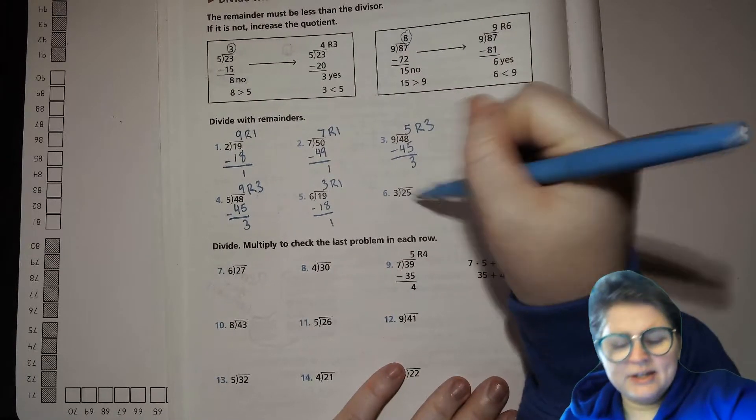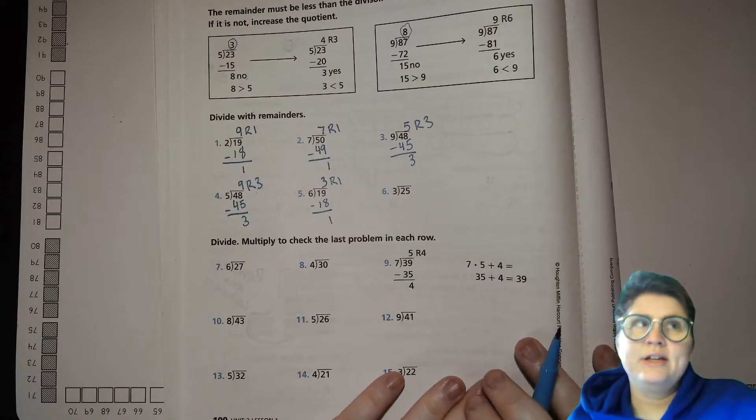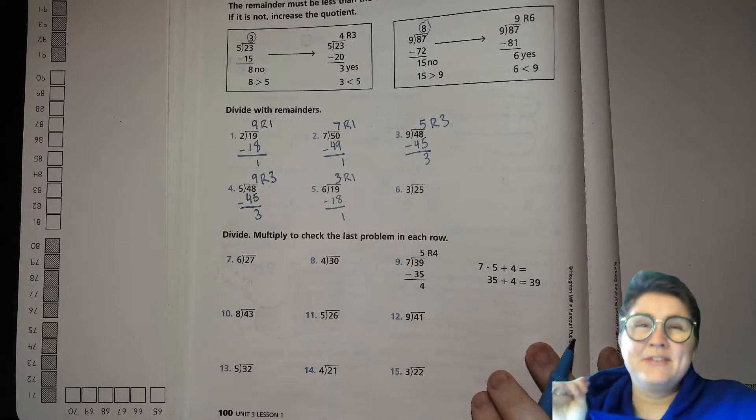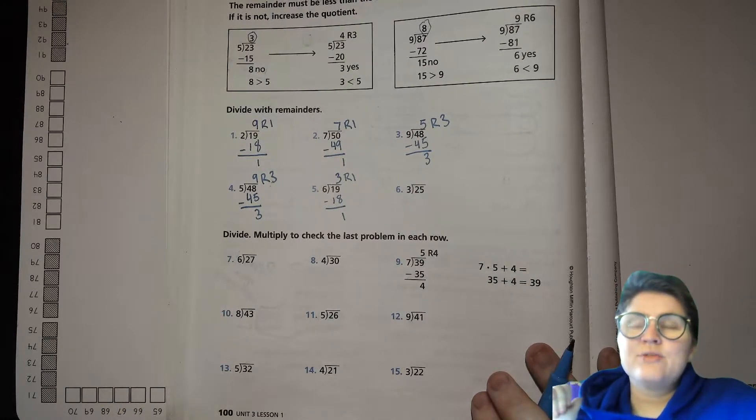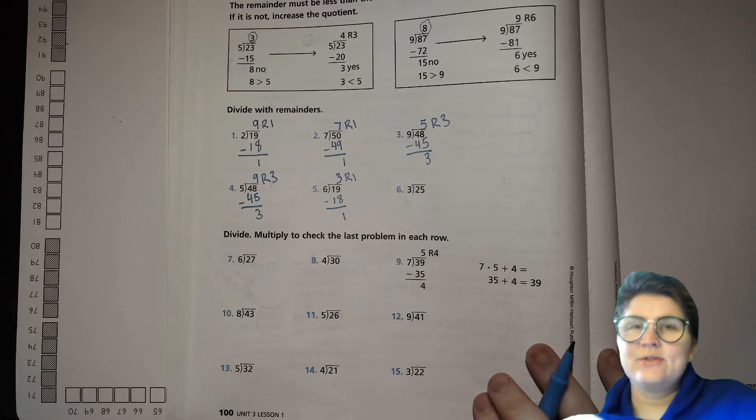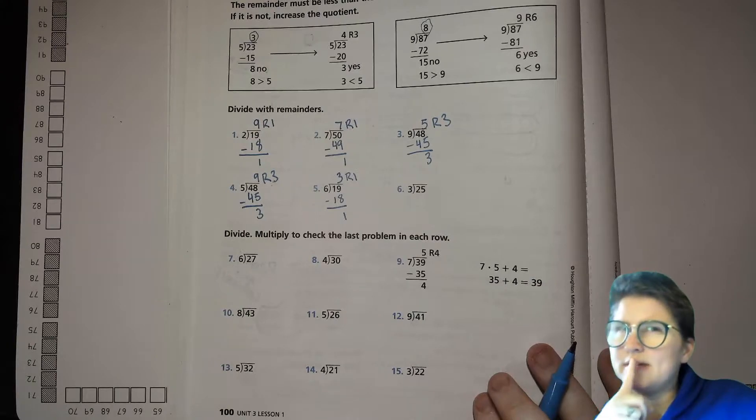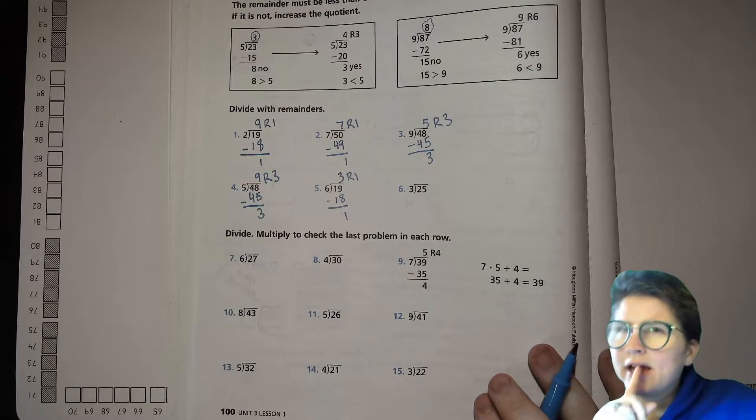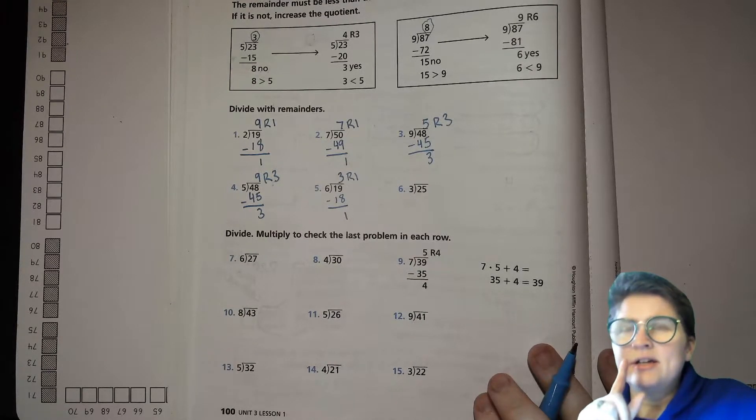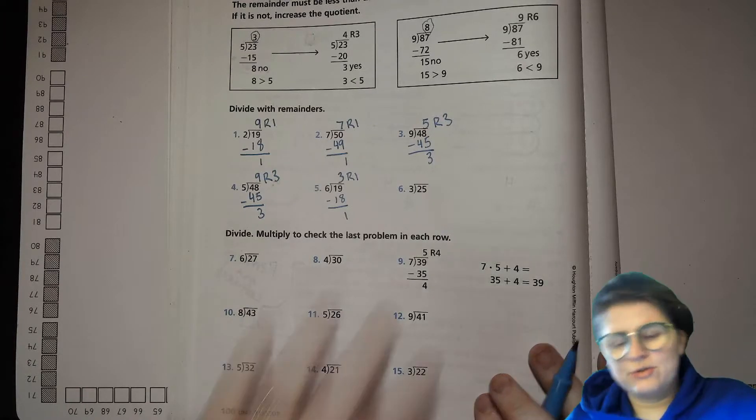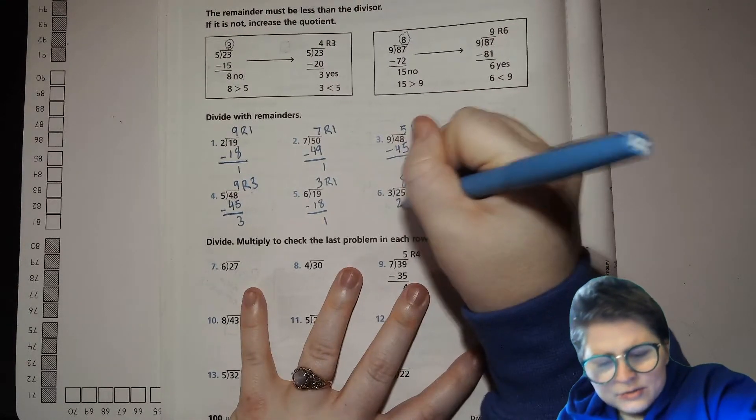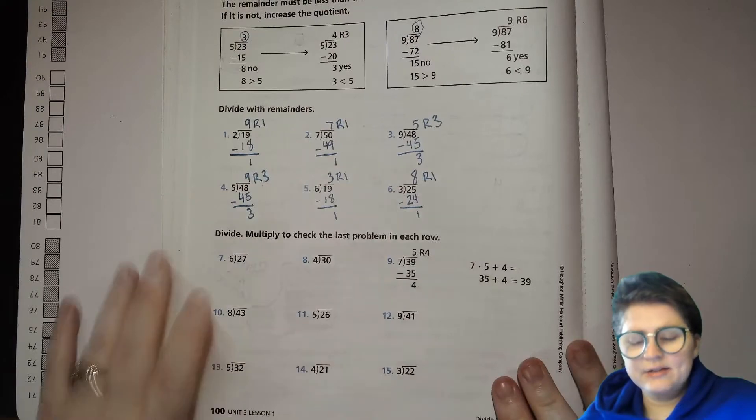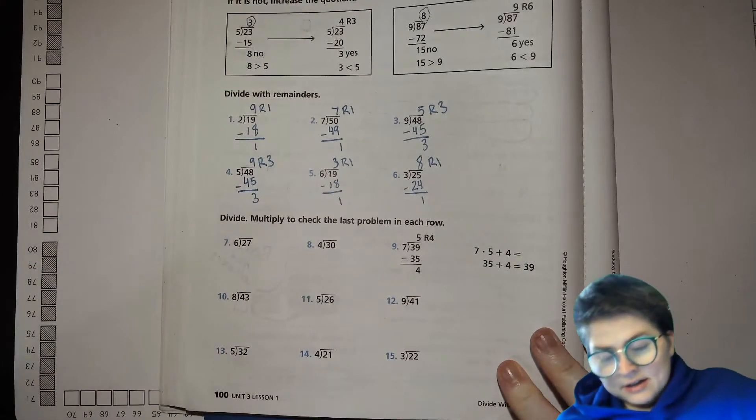3 into 25. 25 divided by 3. I'm going to skip ahead to 3 times 5. That's 15. I don't need to do all those ones below that. 3 times 6, 18. 3 times 7, 21. That's close. That could be it. 3 times 8, 24, right? 3 times 9 is 27. That's too far. So, 3 times 8 has to be it. 24. 8 remainder 1.